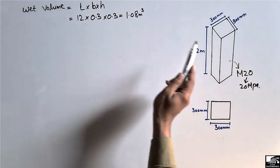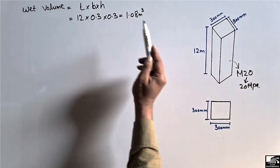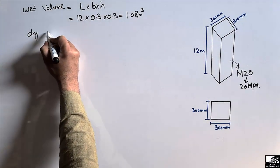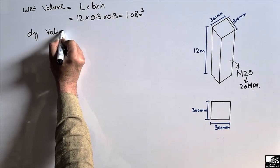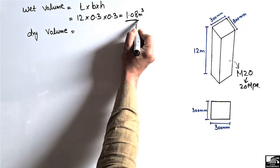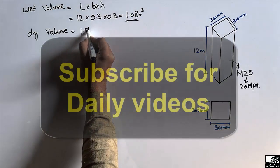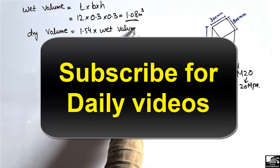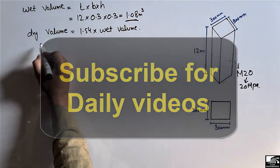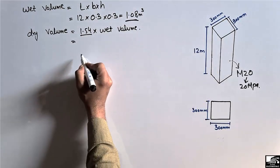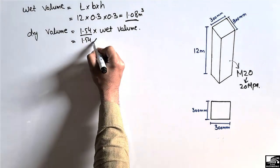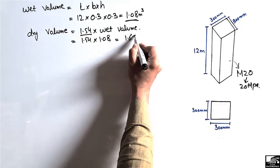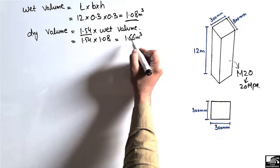Now we need to find the dry volume of this RCC column. To get the dry volume, we multiply the wet volume by a factor of 1.54. So, 1.54 multiplied by the wet volume of 1.08 gives us a dry volume of 1.66 cubic meters.